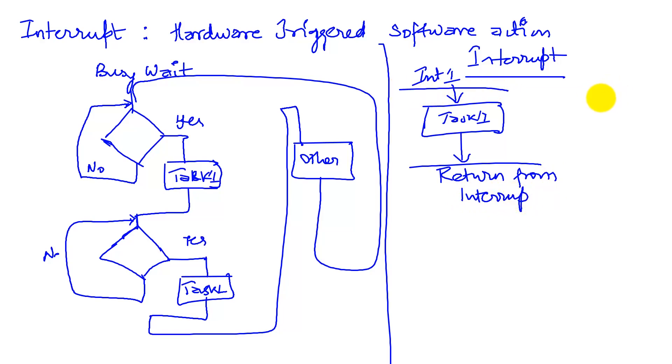So again, if the second task is ready, the conditions for the second task are ready, there will be an interrupt two that will trigger this task. We perform the task, task two, and we return from interrupt.